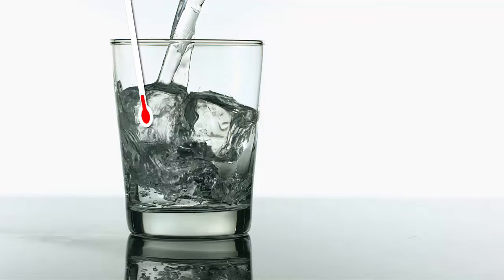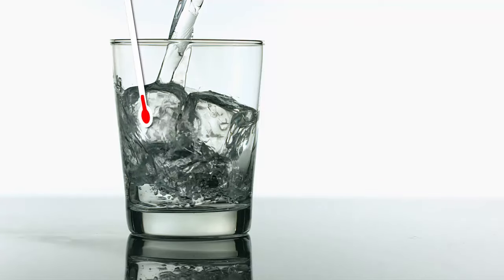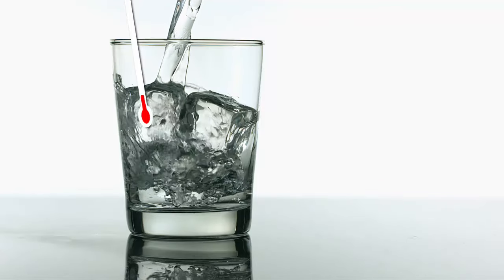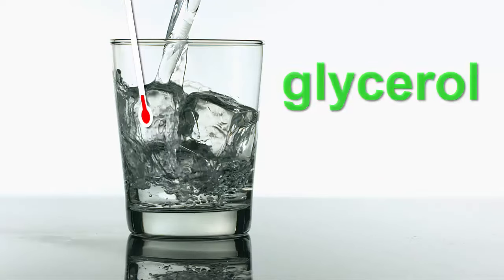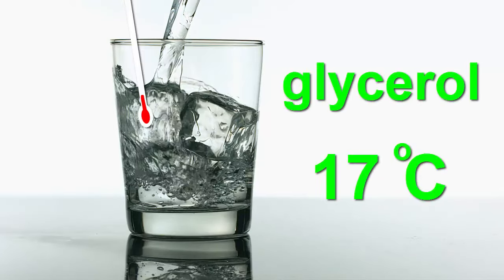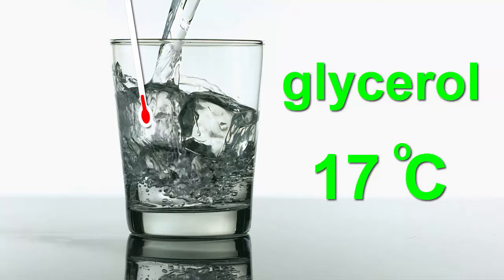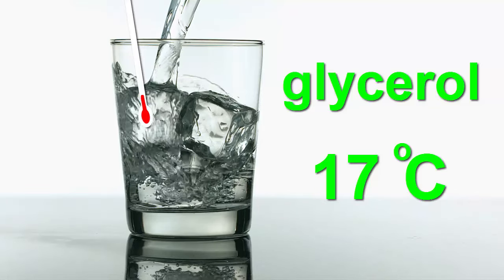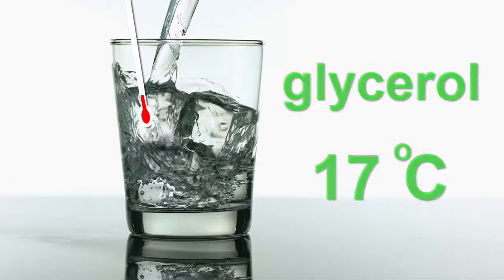And different substances freeze at different temperatures. For example, we only have to cool a substance called glycerol down to 17 degrees Celsius in order to freeze it. This means it might be a liquid during the day when it's hot, and a solid at night when it's cold.